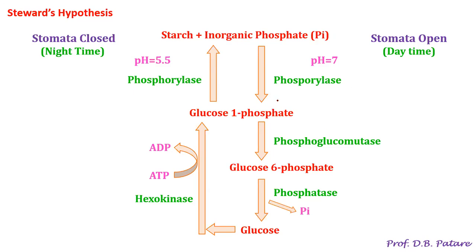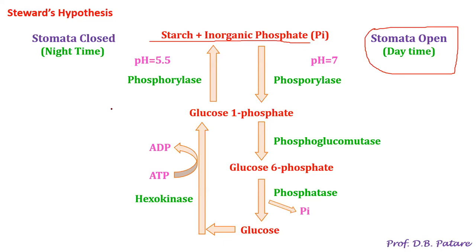Let's start with the detailed mechanism. Initially, during daytime when stomata are supposed to open, starch and inorganic phosphate are involved. At pH 7, the enzyme phosphorylase breaks down the starch into glucose. This is the first reaction where starch is converted to a simpler form, leading to stomata opening.